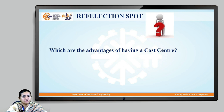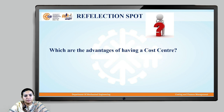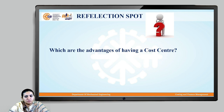Let us have a reflection spot at the end of the cost center concept. What do you think are the advantages of having a cost center? A cost center is basically used for tracking expenses. When we need to compare actual costs versus budgeted costs, we can take help of the cost center. So the main advantage of having a cost center is that we can use it for cost control purposes.